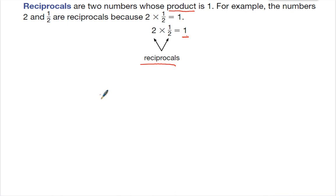And I'll show you how that works. We have 2 over 1 times 1 half. 2 times 1 is 2. 1 times 2 is 2. And then 2 over 2 is equal to 1 whole. So reciprocals always equal 1.